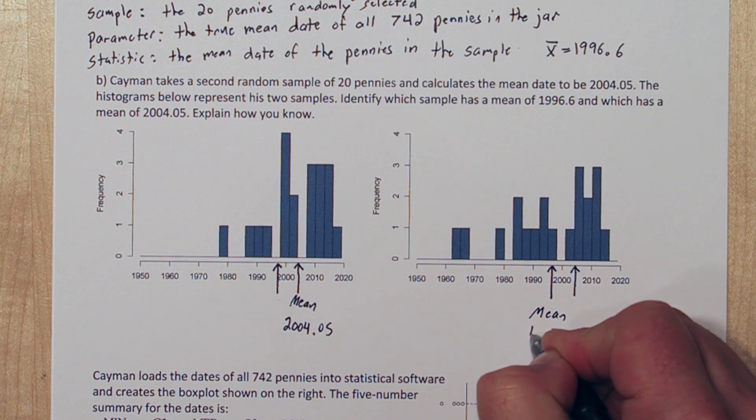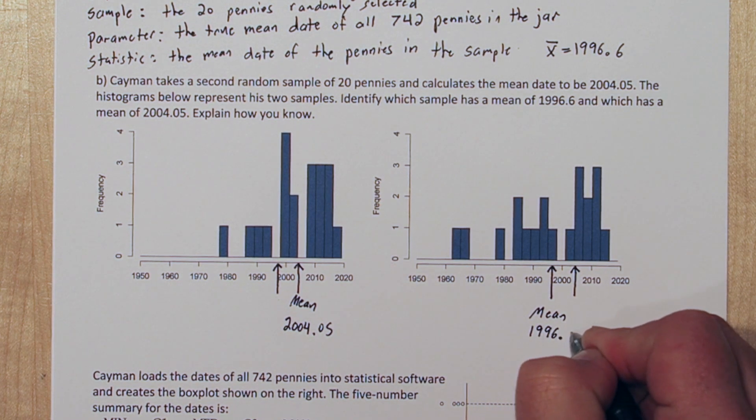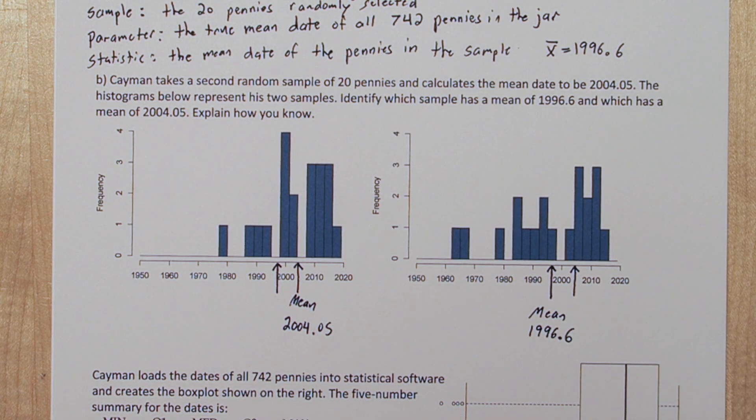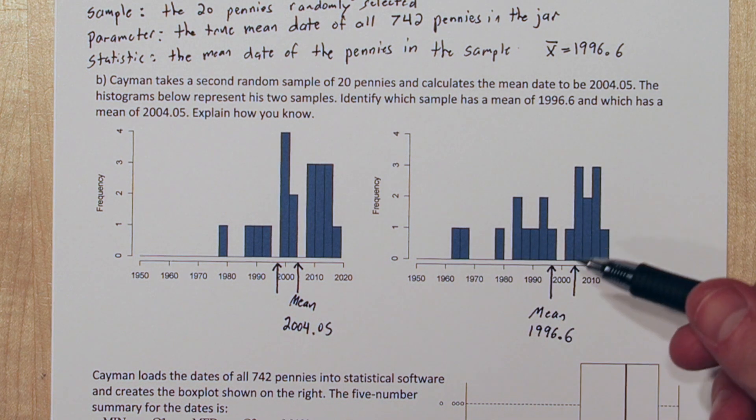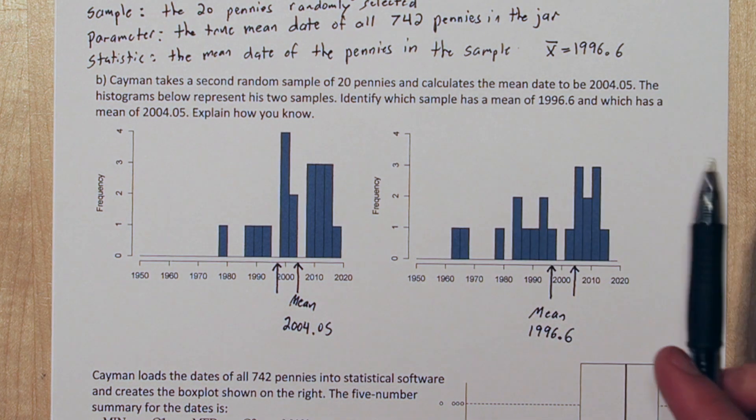Another thing to note is on skewed data, the mean always chases the tail of the skew. So this is skewed left, so the mean is going to be to the left of the median value.